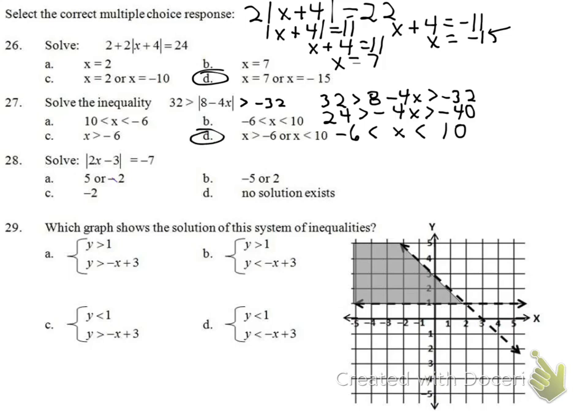Number 28: the absolute value equals -7. Since an absolute value is always positive, it can never equal a negative number. The answer is automatically D — no solution.